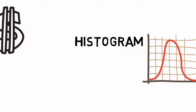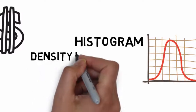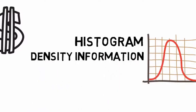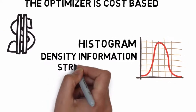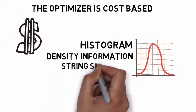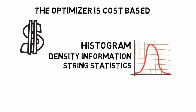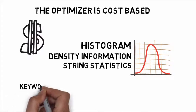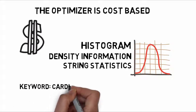In this lecture, we're going to talk about statistics and how they affect the decisions the optimizer makes. Statistics contain three main pieces of information: the histogram, the density information, and string statistics, all of which help with different parts of the cardinality estimation process.